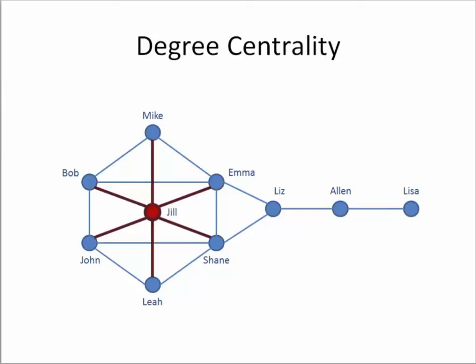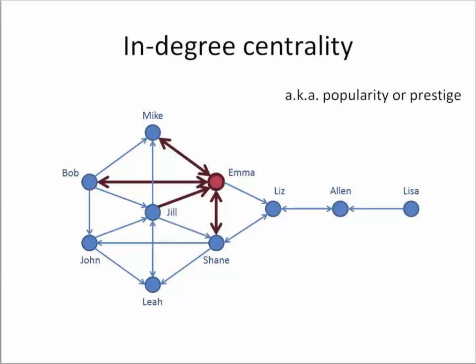However, network measures may have a specific meaning when considered in the context of directed graphs, which can completely change the meaning of Jill's connections compared to anybody else in the network. Therefore, another important measure is called in-degree centrality. In-degree centrality means how many other nodes are directly trying to establish communication or are talking to a particular node. In this case, we can see that Emma is the node commonly referred to by other nodes in the network — in an educational context, this may represent the number of other actors seeking Emma's help.